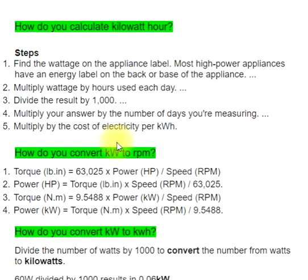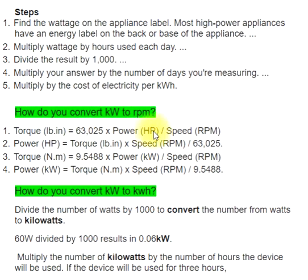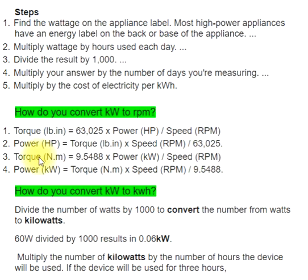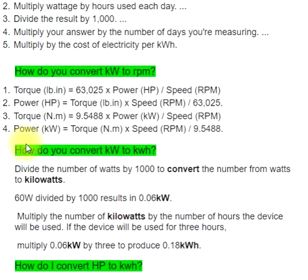How do you convert kW to RPM? Formula 1: Torque (Lb.in) = 63025 x power (hp) / speed (rpm). Formula 2: Power (hp) = torque (Lb.in) x speed (rpm) / 63025. Formula 3: Torque (Lb.in) = 9.5488 x power (kW) / speed (rpm). Formula 4: Power (kW) = torque (Lb.in) x speed (rpm) / 9.5488.